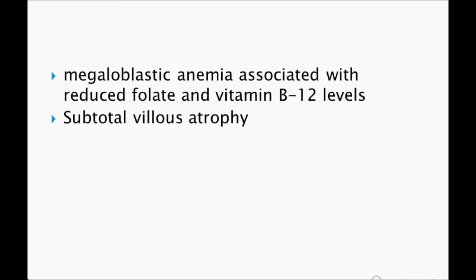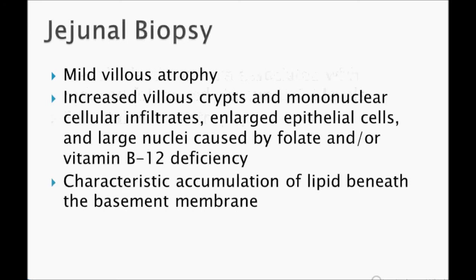Subtotal villous atrophy is important. Jejunal biopsy shows mild villous atrophy, increased villous crypts, mononuclear cellular infiltrate, and enlarged epithelial cells with large nuclei caused by folate or vitamin B12 deficiency. A characteristic accumulation of lipid beneath the basement membrane is very important — this can also be seen in celiac disease, but lipid beneath the basement membrane is a key finding.